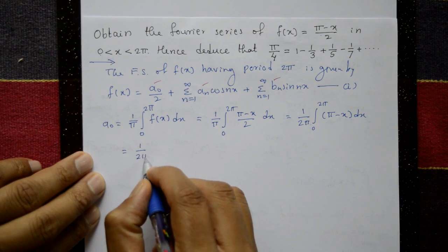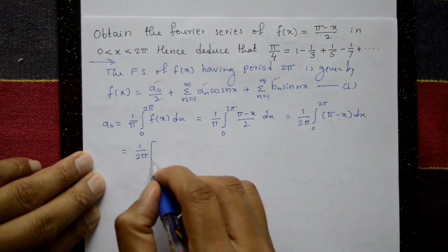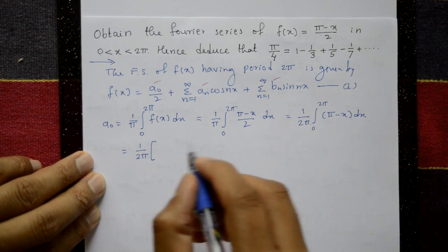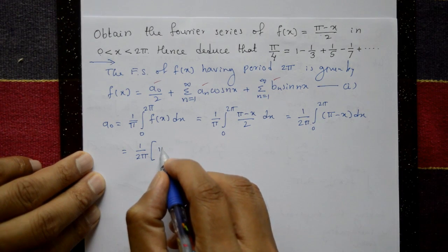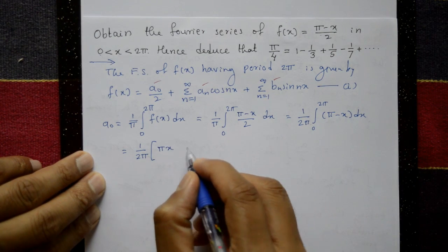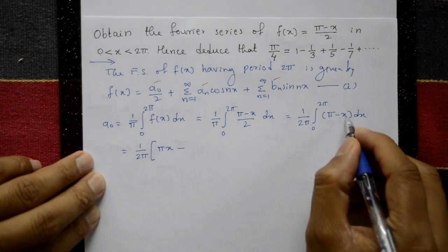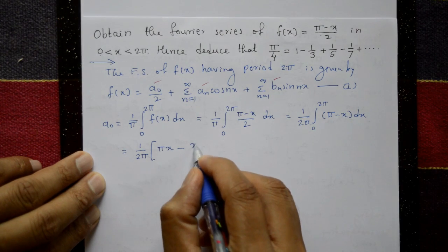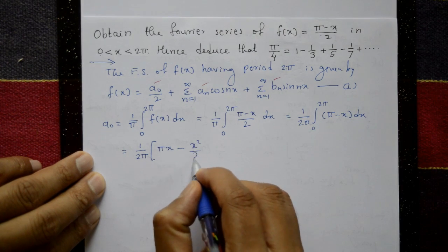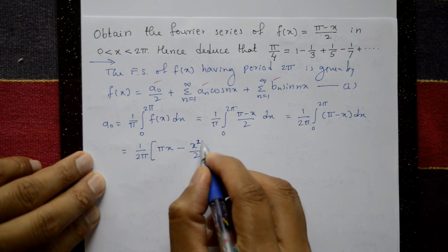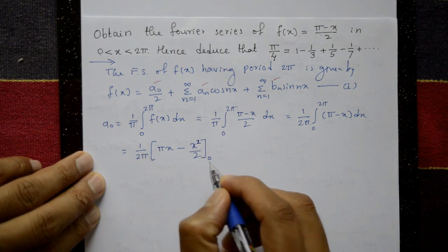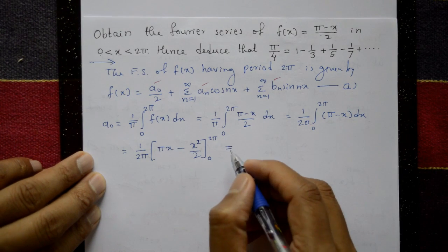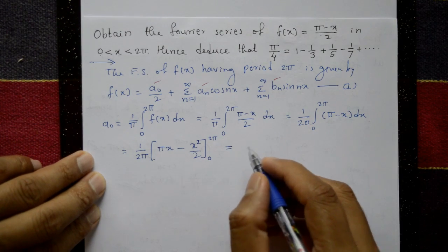Integrating: (1/2π) × [πx - x²/2] with limits 0 to 2π.